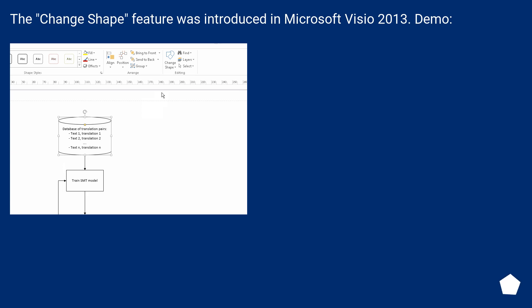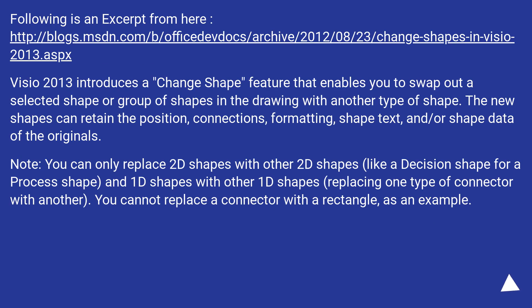Demo. Following is an excerpt from this URL. Visio 2013 introduces a Change Shape feature that enables you to swap out a selected shape or group of shapes in the drawing with another type of shape. The new shapes can retain the position, connections, formatting, shape text, and/or shape data of the originals.